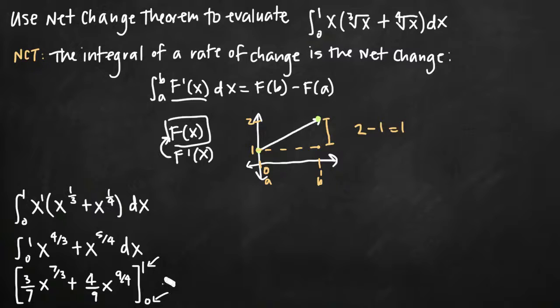So we'll evaluate it at B, we'll plug in 1. So 3 sevenths times 1 to the 7 thirds. 1 raised to the 7 thirds is still 1. So we'll get 3 sevenths times 1 plus 4 ninths times 1, so just 4 ninths. And then we'll subtract whatever we get when we plug in 0. Of course, when we plug in 0 to both of these, we'll get 0, so there's no need to write it out.